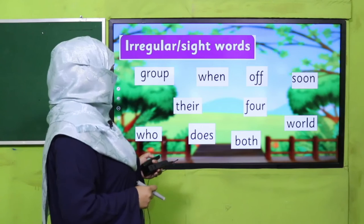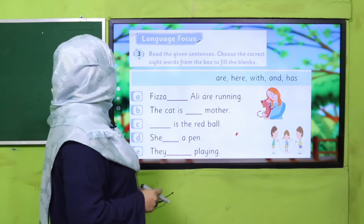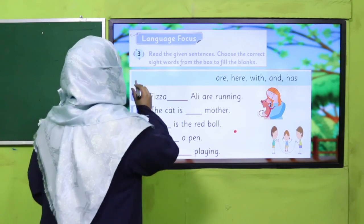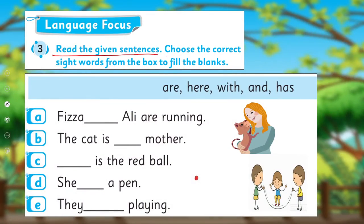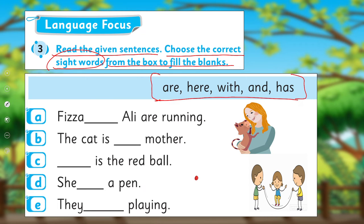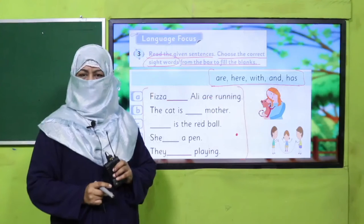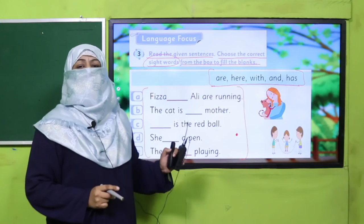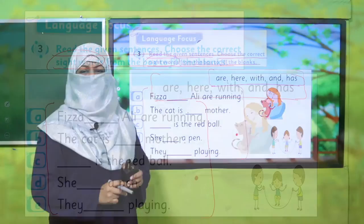It's time to practice this concept. You will read the given sentences and choose the correct sight words from the box to fill in the blank. We have given you a list of words — all are sight words — and you have to complete the sentences using these words. Pause the video, complete this task in your book, and then come back.